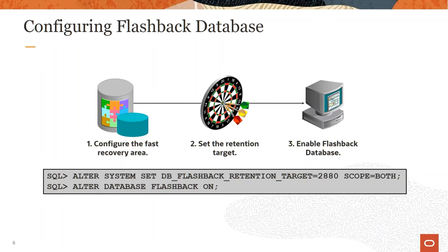After configuring the fast recovery area, you will need to set DB_FLASHBACK_RETENTION_TARGET to an appropriate value — how long you want to keep flashback logs in order to flashback to your required point. You will also enable flashback database. Very importantly, flashback requires archive log mode, so you will have to configure your database for archive log first, and then go through these configuration steps.